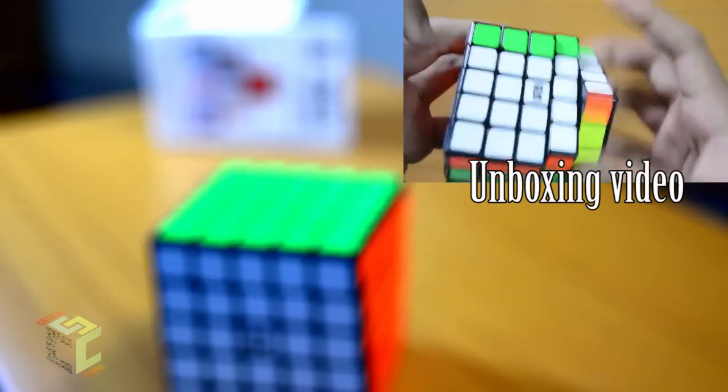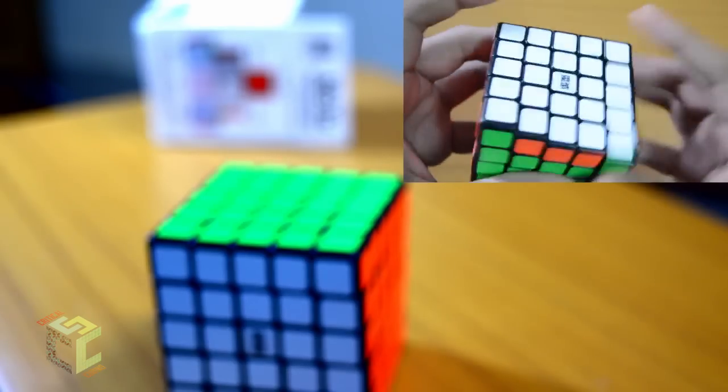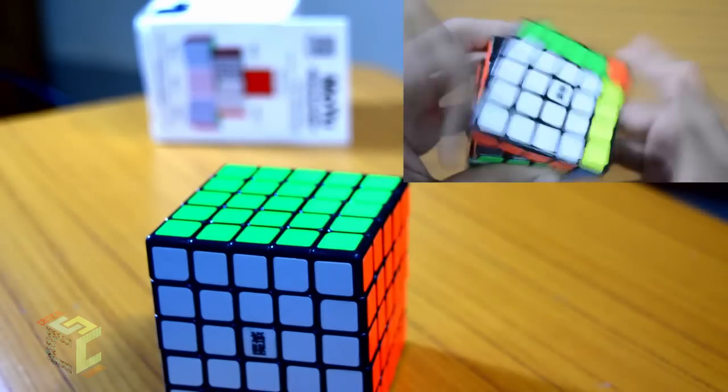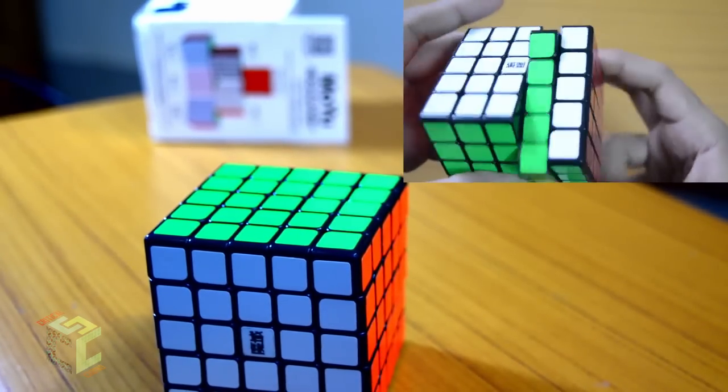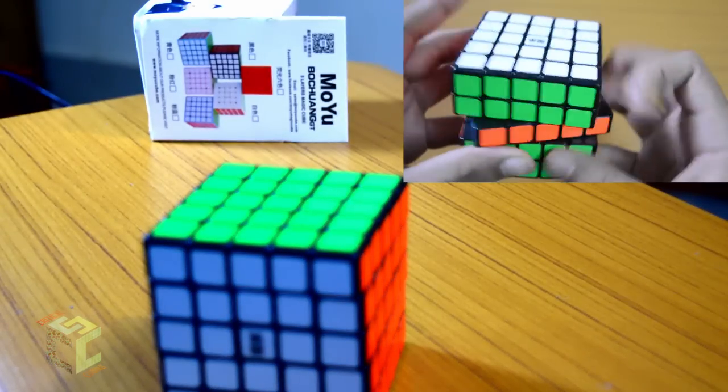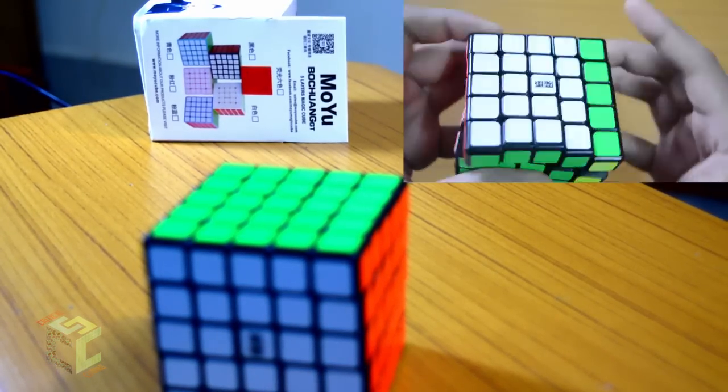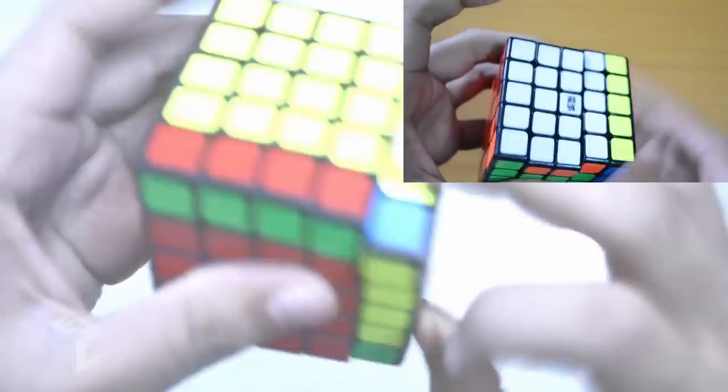The cube comes with the normal Moyu bright shades which look beautiful on the cube and are pleasing to the eyes. It is a very stable and solid feeling 5x5. Out of the box, it has this sandy feeling which goes away after breaking it in.